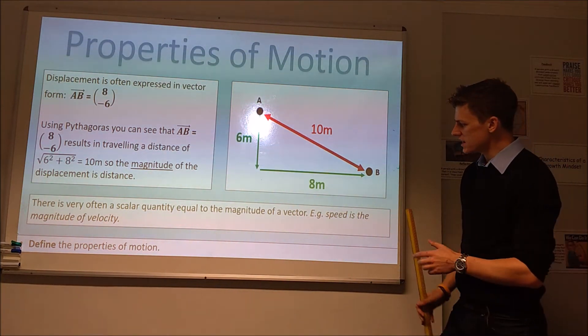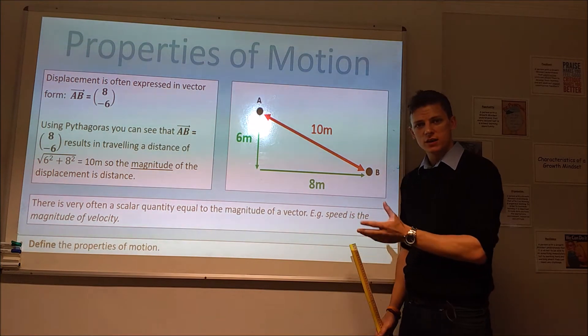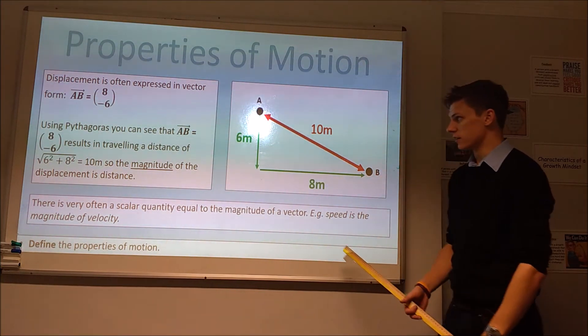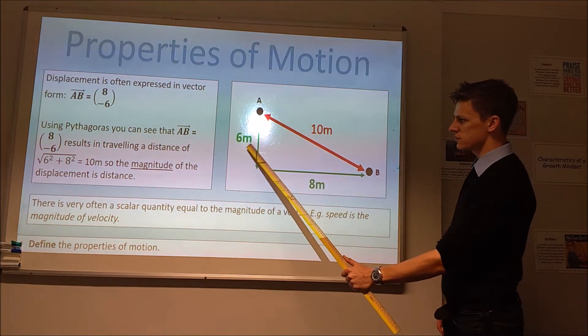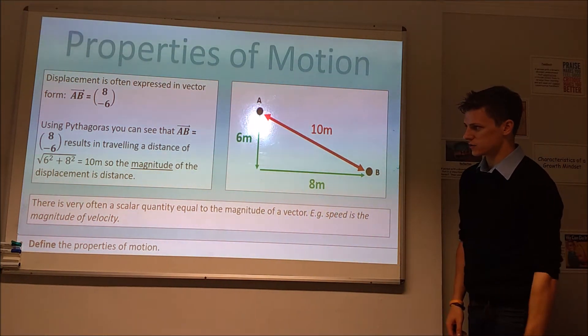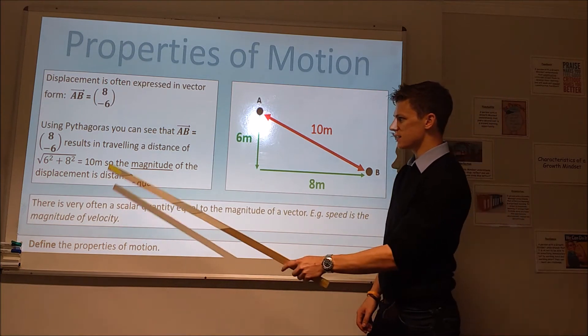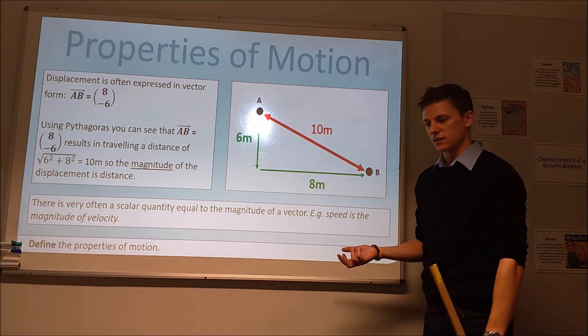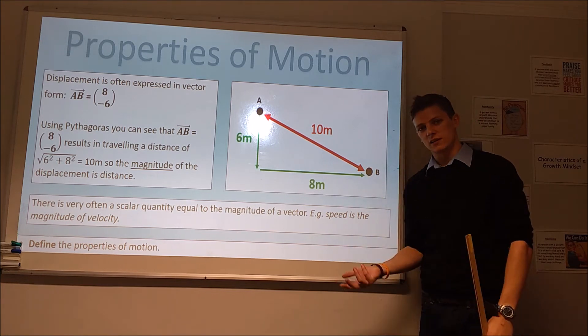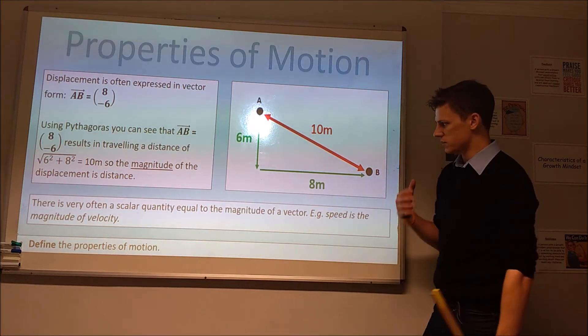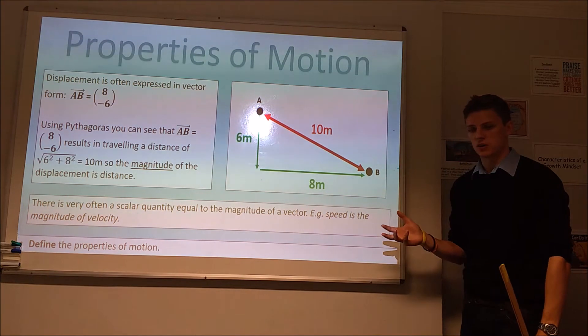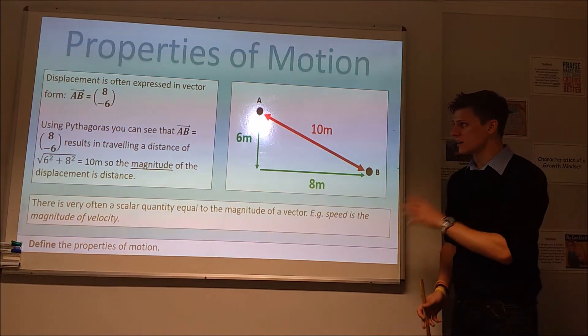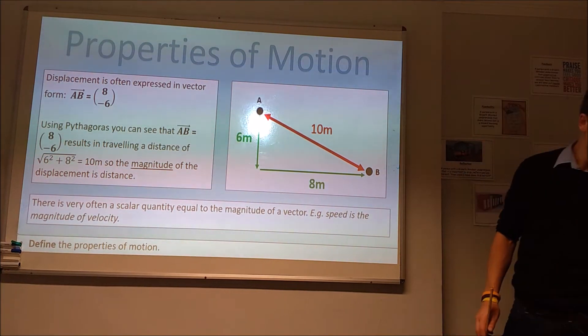What you can see is we've actually formed a right-angled triangle, because the x and y directions are perpendicular to each other. We can use Pythagoras, and if we do six squared plus eight squared and square root it, we see that we get ten meters. We can see that the magnitude of your vector is the same as the scalar of distance there. That's what we call the magnitude of the vector, or the size of the vector there.